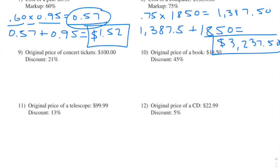In number nine we're taking 21% of 100. Remember a percentage is based out of 100, so 21% of 100 is just 21. We take $100 and subtract the discounted amount of $21 — we subtract because it's a discount — and we end up getting $79.